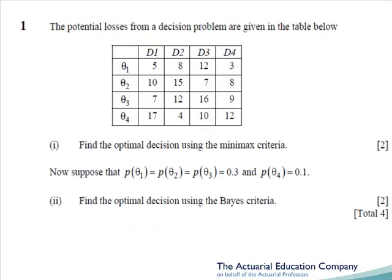The first question on the paper involves decision theory where we're asked to calculate the optimal decision using the minimax criteria — that is, we choose the decision which has the best worst-case scenario. In the second part of the question we choose the decision using the Bayes criteria, so all we have to do is work out expected losses under each of the four decisions. This kind of question has been asked so many times before that any well-prepared candidate will have easily obtained all the marks.